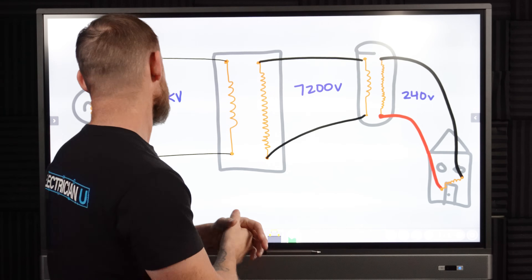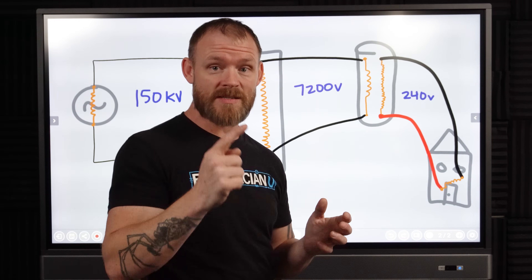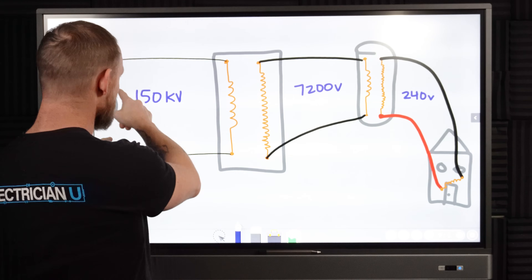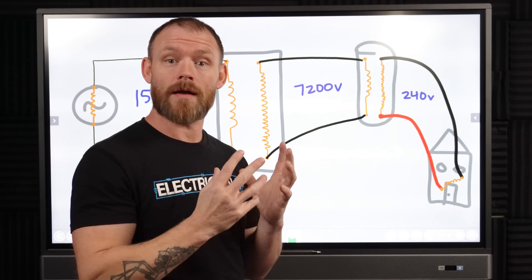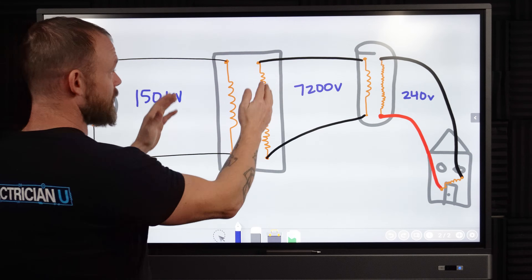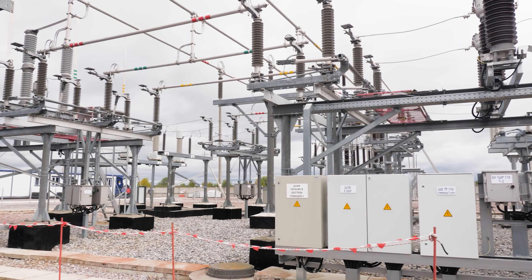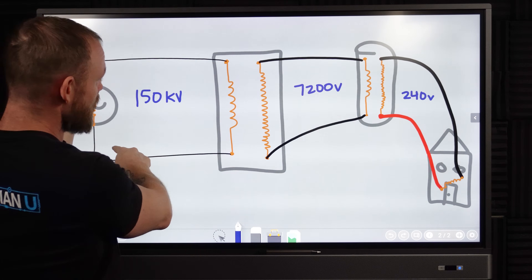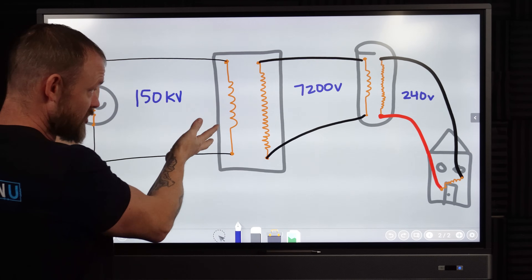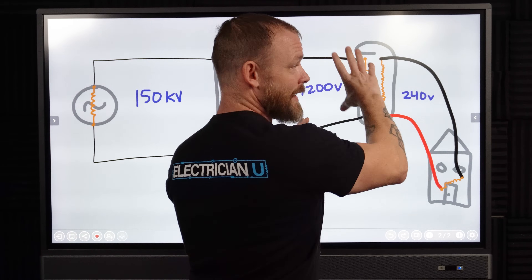Utility power generation starts with a generator at a utility company — essentially just a spinning magnet carrying mechanical energy. As it spins, the magnetic field interacts with the electrons inside the conductors, moving them back and forth in a complete loop. A substation out in the field — those fenced-off electrical installations you see in a city — contains a transformer that takes a really high voltage like 150,000 volts and transforms it down to a distribution voltage, which then goes out to neighborhoods, running along poles with transformers at each one.